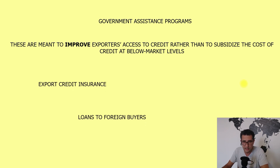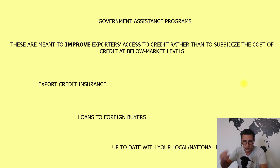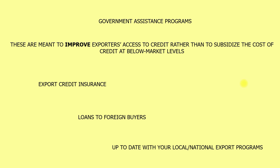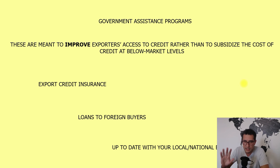The most important actor in this field is the import-export bank of your own country — usually an independent agency that facilitates exports of goods and services through tools like export credit insurance, loan guarantee programs, direct loans to exporters, or loans to foreign buyers. Always stay up to date with local and national export programs, as these target specific industries from agricultural and rural development to high-tech. There are a lot of opportunities out there, even if the bureaucracy can initially be discouraging.